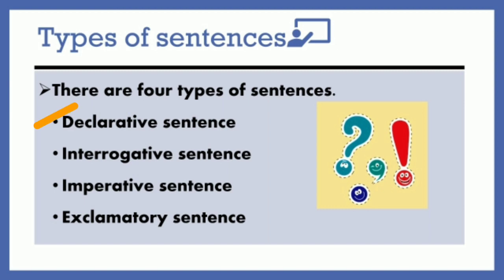There are four types of sentences. First, the declarative sentence, interrogative sentence, imperative sentence, and then the exclamatory sentence.